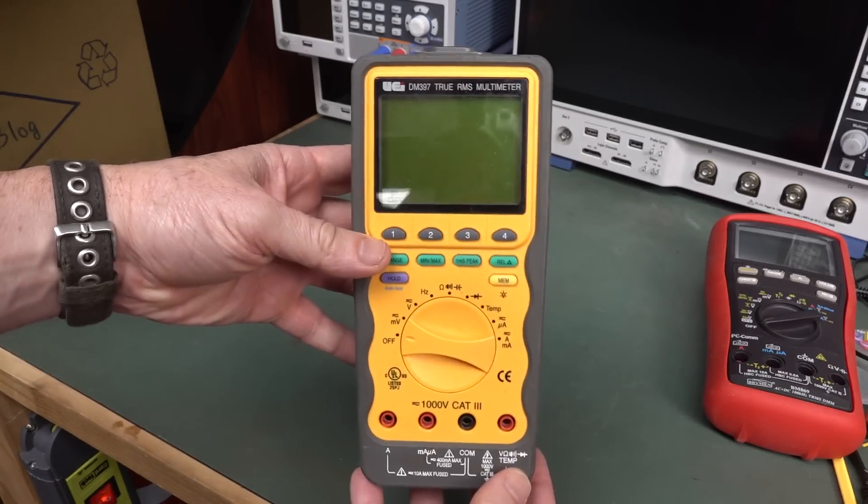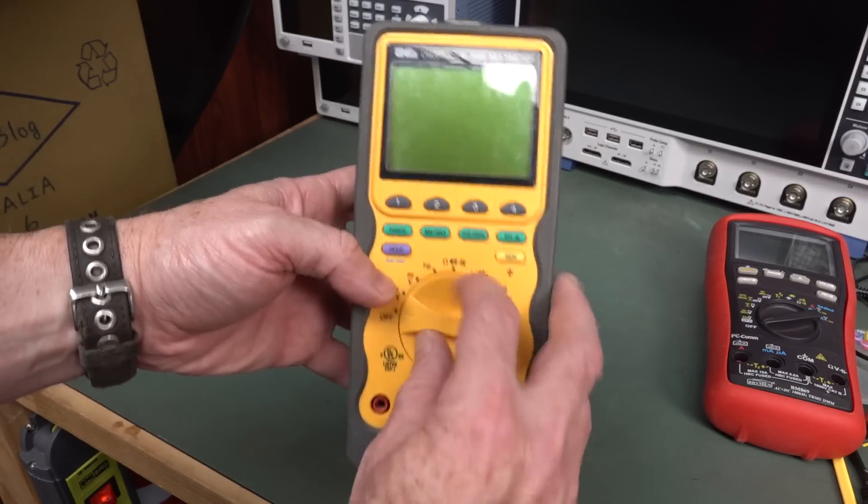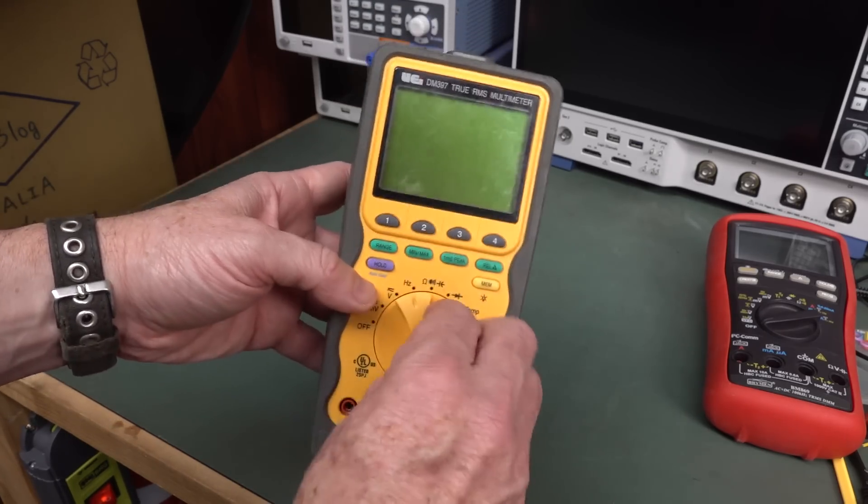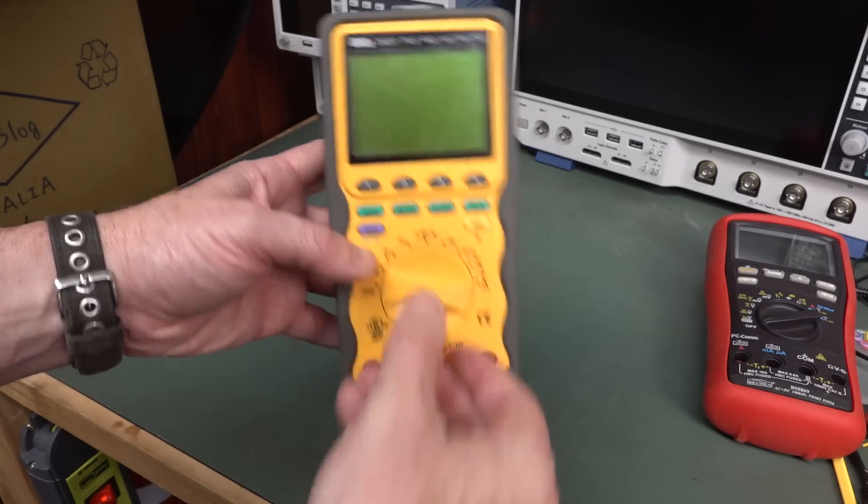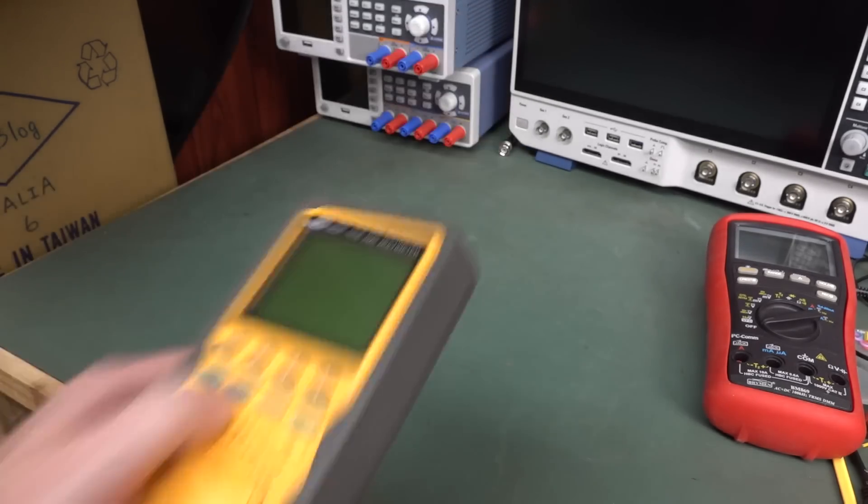Look at that. You might recognize that. The UEI DM397 True RMS Multimeter. The one with the big clunkin' power switch. Didn't it win my $100 shootout? Or something like that? Like, 12 years ago? Or something like that? So, yeah, still got that.